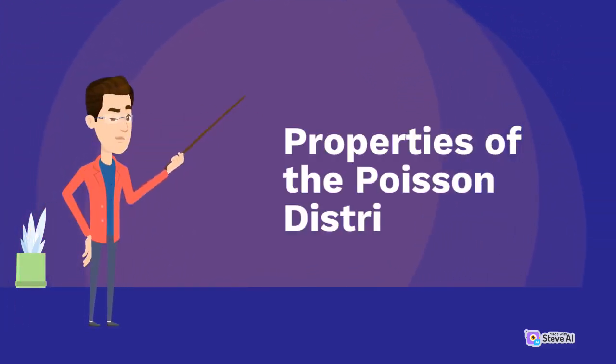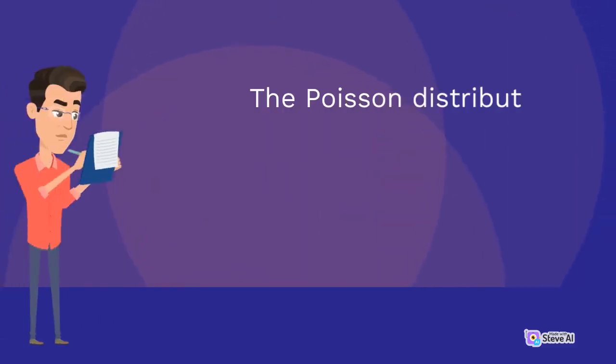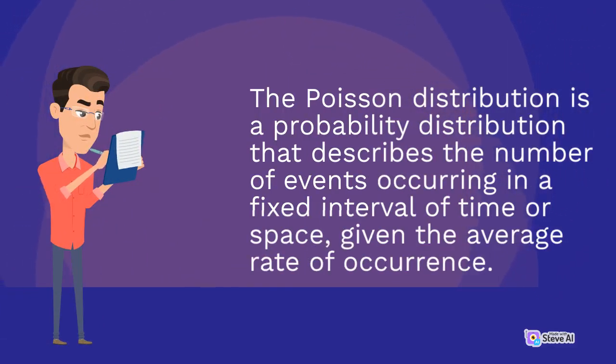Properties of the Poisson Distribution. The Poisson Distribution is a probability distribution that describes the number of events occurring at a fixed interval of time or space, given the average rate of occurrence.